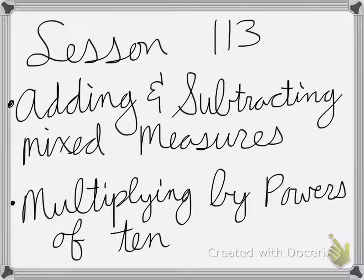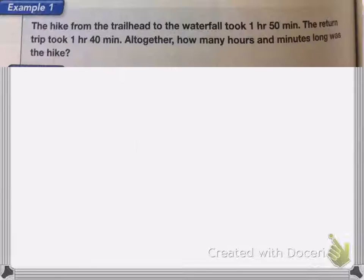Okay, so lesson 113 is on adding and subtracting mixed measures and multiplying by powers of 10. So here I have the hike from the trailhead to the waterfall took one hour and 50 minutes. The return trip took one hour and 40 minutes. Altogether, how many hours and minutes long was the hike?